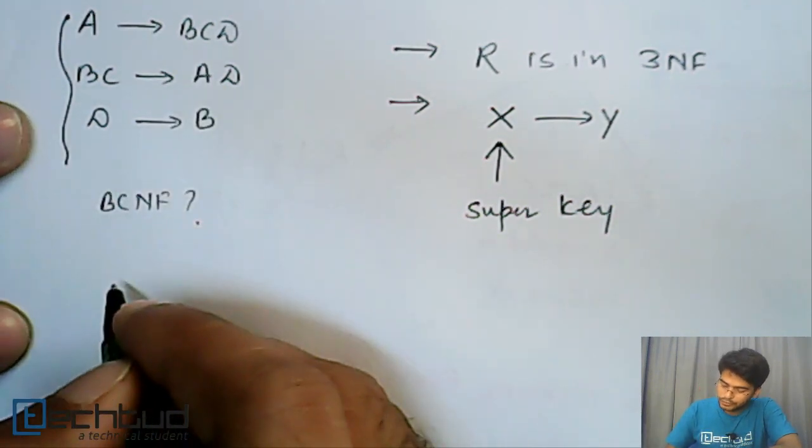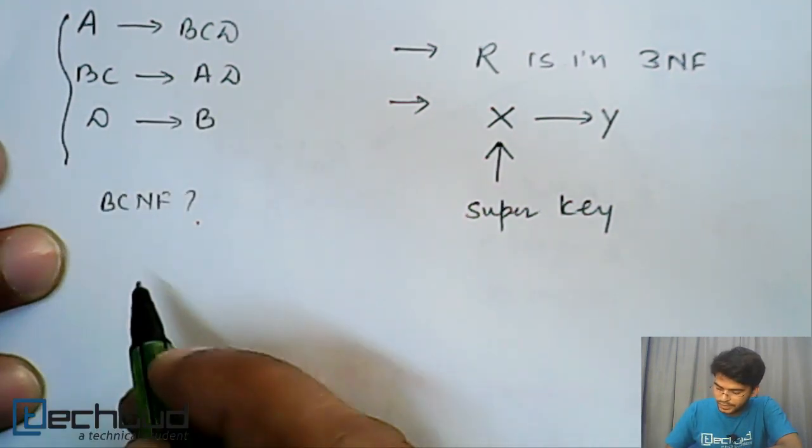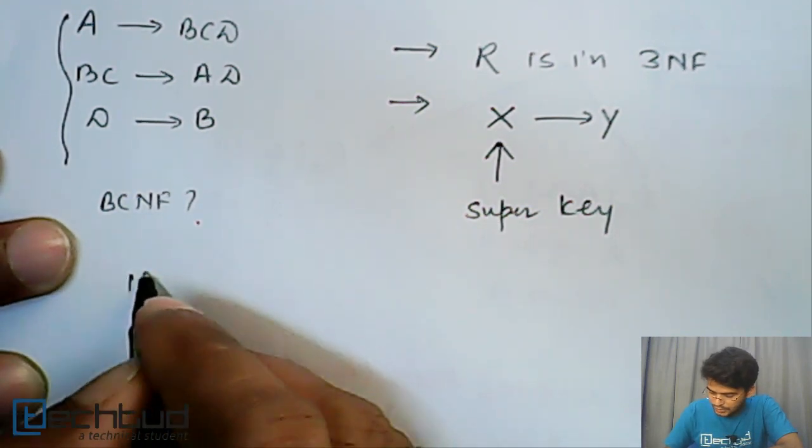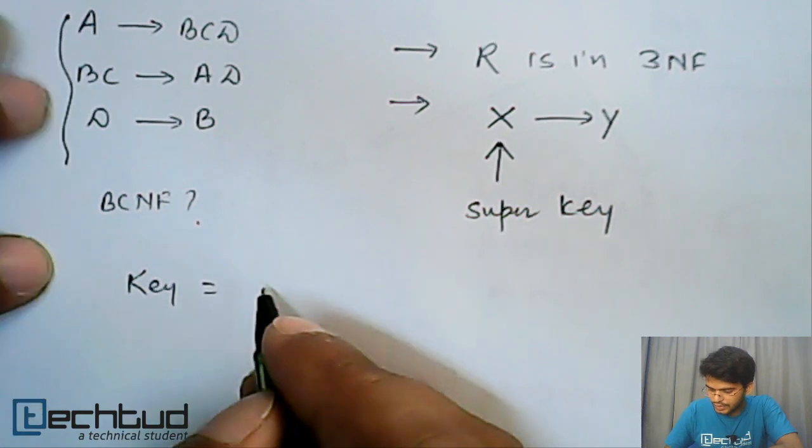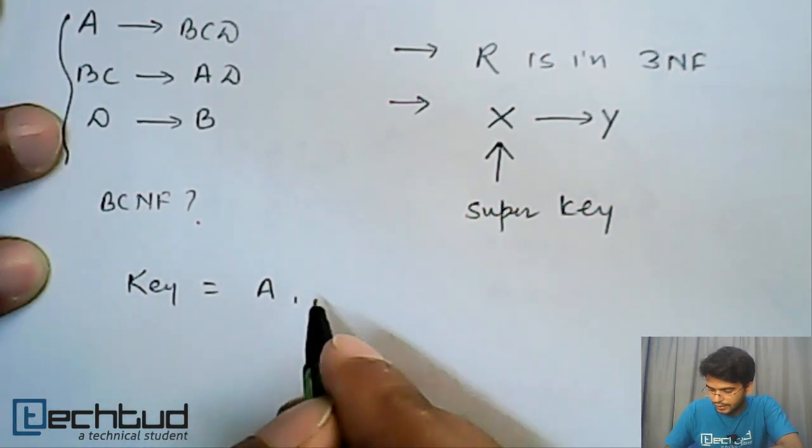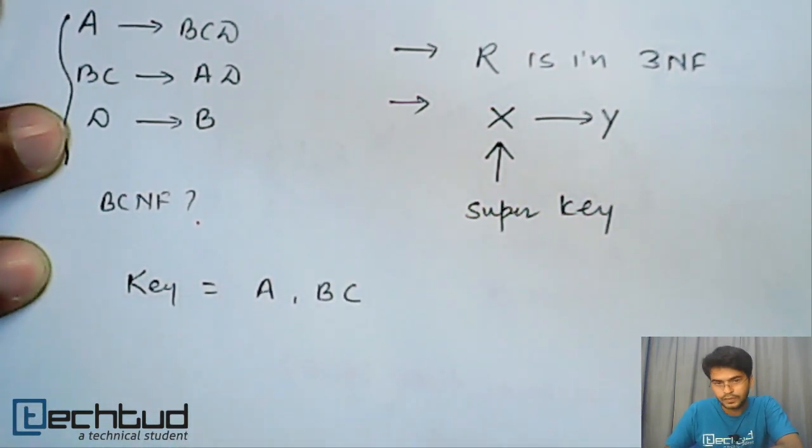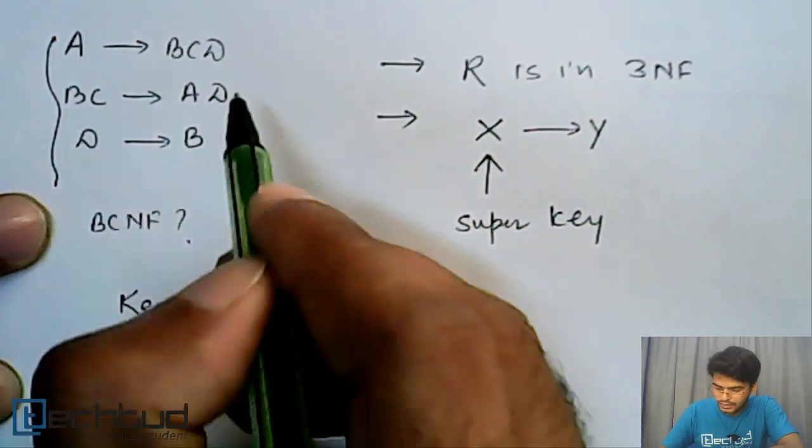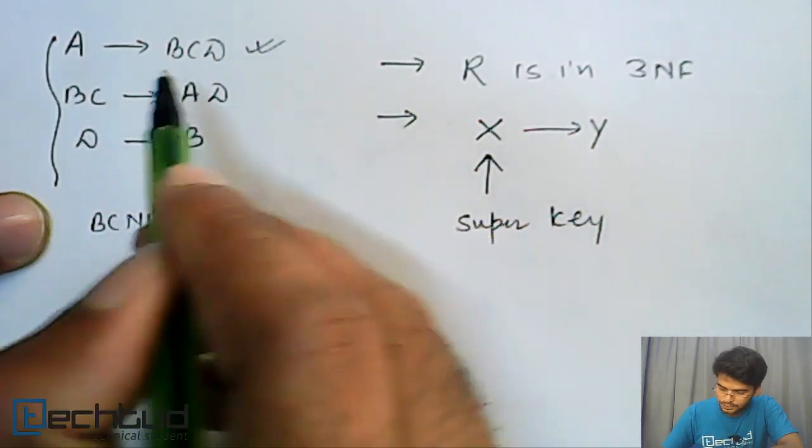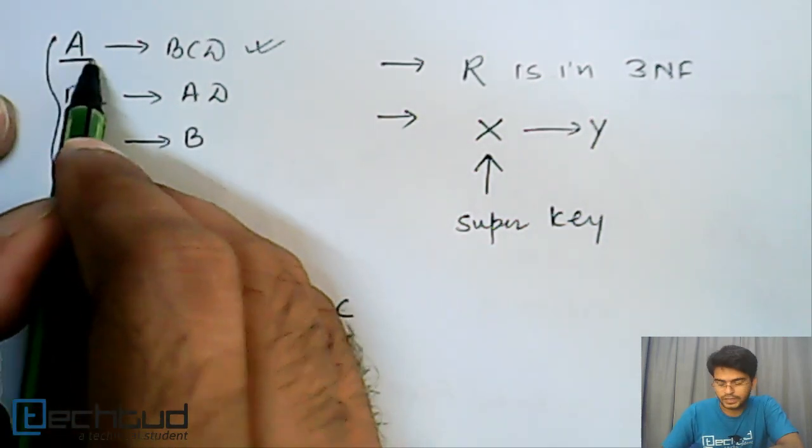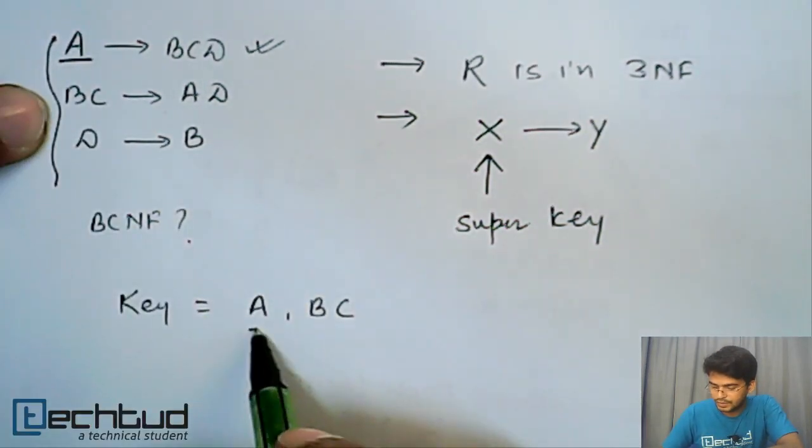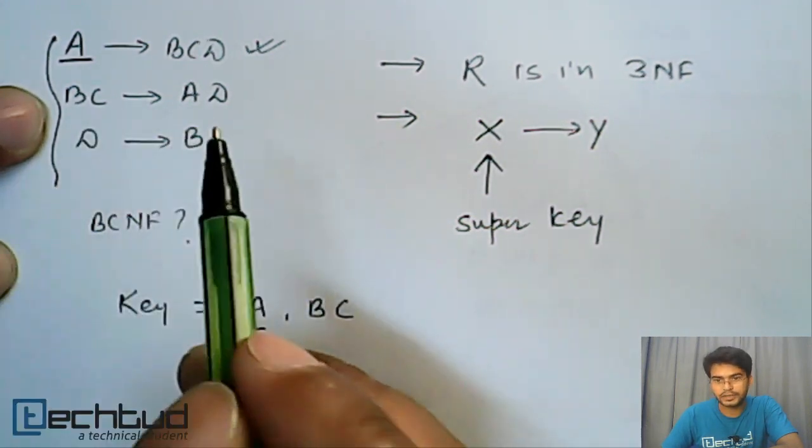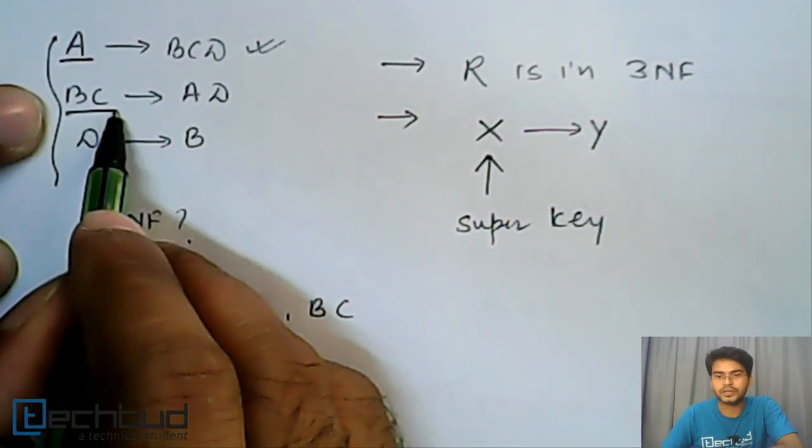Now we have to find out whether it is in BCNF. So we will see what is the key of this relationship. So key is A and BC. Now if you see this functional dependency here, A is a super key because it can determine all the elements, all the remaining attributes. BC is also key.